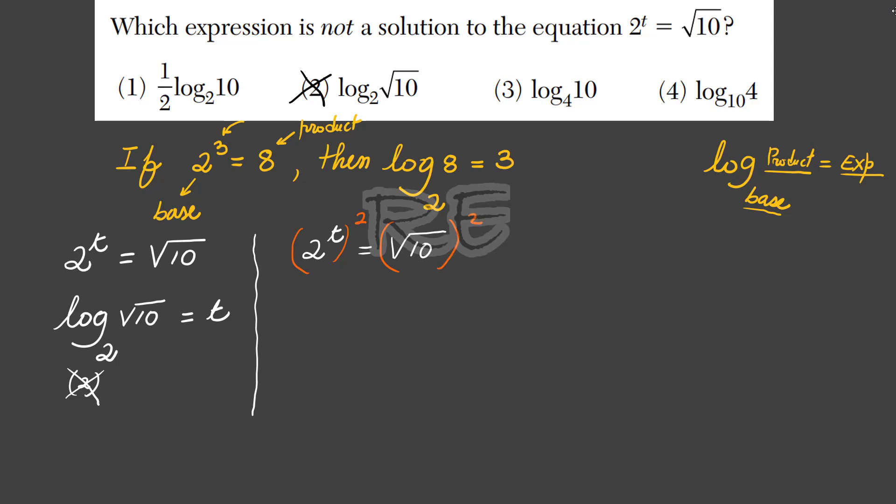2 to the t equals square root of 10. If we square both sides, 2 to the 2t equals square root of 10 squared, which is 10. We can isolate 2 to the second: 2 squared in parenthesis to the t equals 10. Since 2 squared is 4, 4 to the t equals 10.